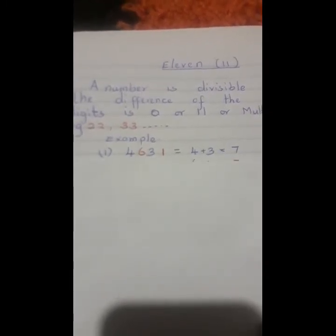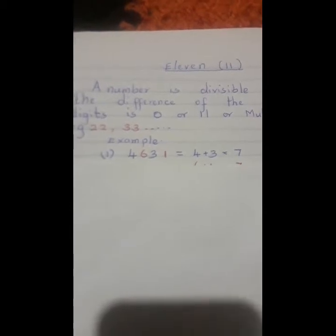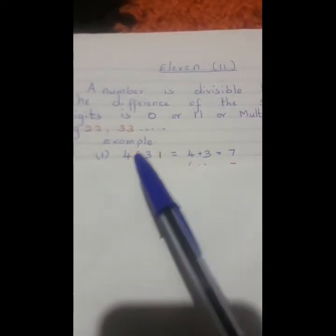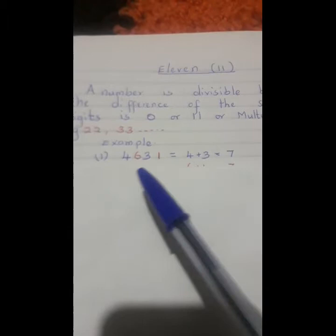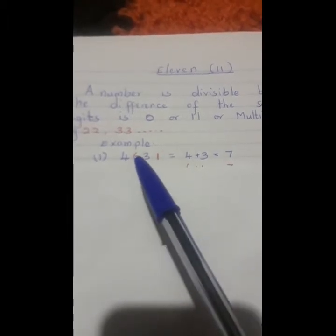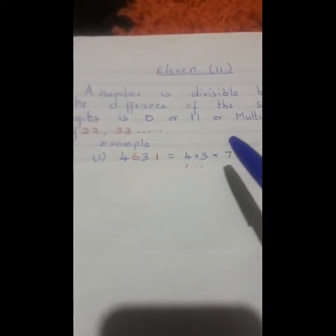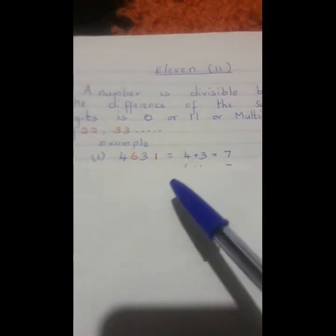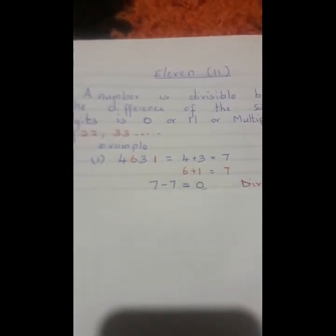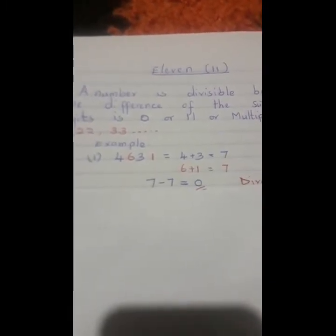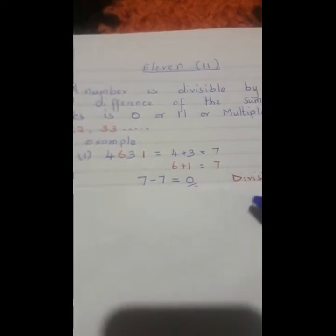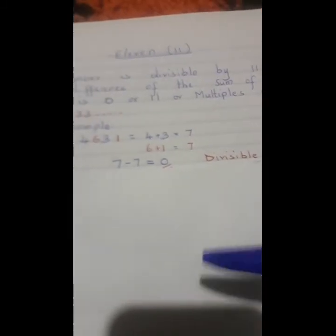We have got the first example: 4,631. The alternate numbers are 4 and 3, and then 6 and 1. When we add 4 and 3 is 7, and when we add 6 and 1 is also 7. The difference between 7 and 7 is 0. That means this number is divisible.